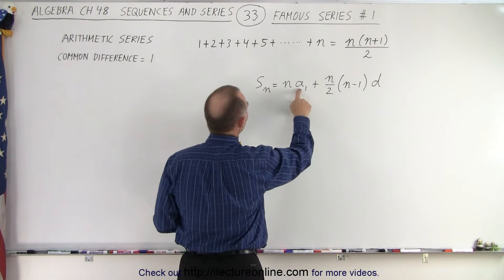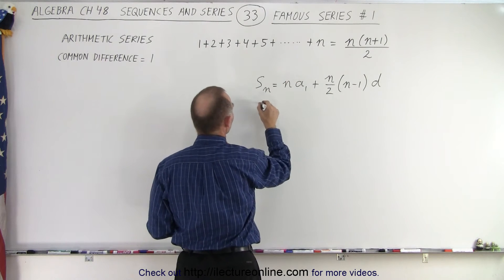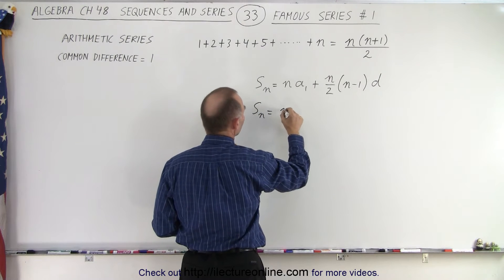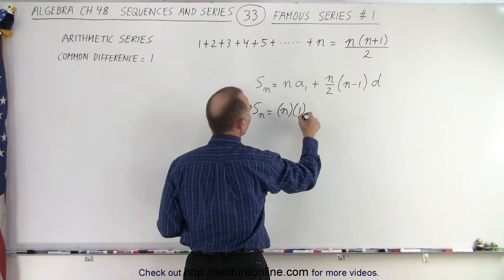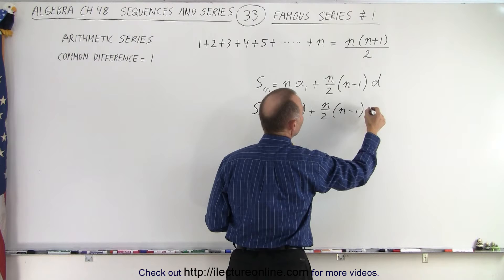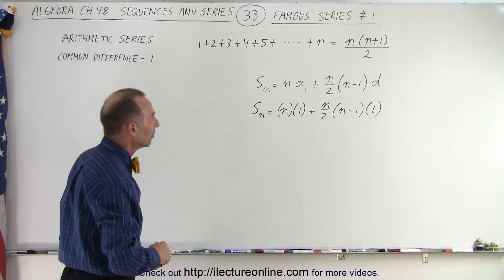So first of all, in this case, a₁ = 1. So we can replace that. We can say that sₙ = n times 1 plus (n/2)(n-1), and d here is also going to be 1 because that's the common difference in this series.